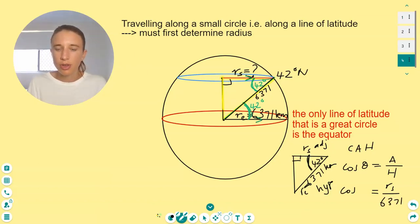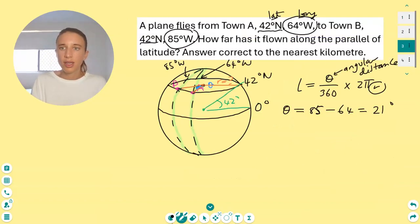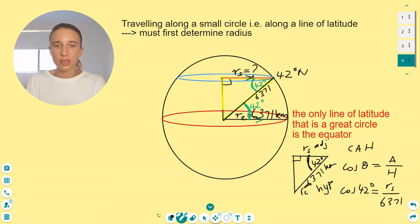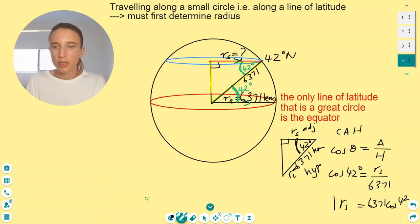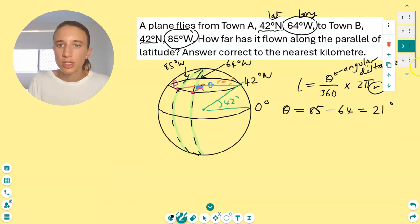Cos θ equals A over H equals adjacent over hypotenuse, which we have a value for the radius of the earth. And we've got cos and our angle is 42 here, not to be confused with this angle, which is angular distance. Now let's just get an expression for radius. So that's being divided by 6,371. So let's multiply by 6,371 on both sides, which gives me that, which gives me an expression for our radius. 6,371 cos 42.